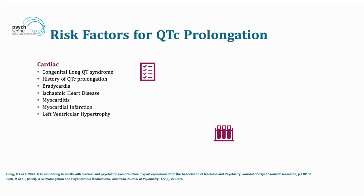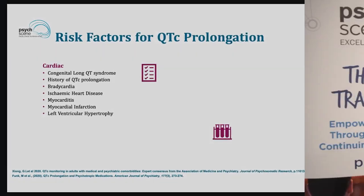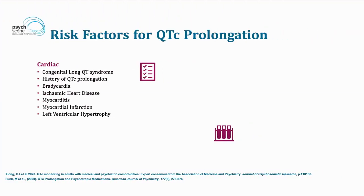There are a number of risk factors associated with QTc prolongation that are important in clinical practice, as having multiple risk factors increases the concern when prescribing medications. Cardiac vulnerability includes congenital long QT syndrome, previous history of QTc prolongation — so family history is important — cardiomyopathies, ischemic heart disease, and similar conditions. Any cardiac vulnerability can be associated with QTc prolongation.